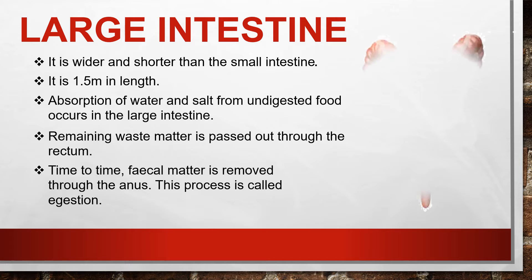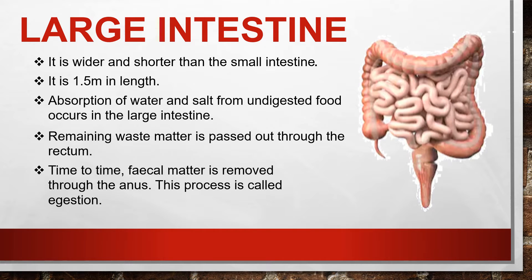The digested food materials are absorbed by the small intestine and transported to different parts of our body through blood vessels to build complex substances such as proteins. This process is called assimilation. Our body is made up of many cells, and in each cell glucose breaks down to form carbon dioxide and water with the help of oxygen. Carbon dioxide is a waste product which we exhale, and energy is released during this process.